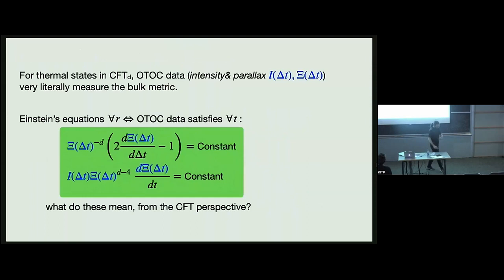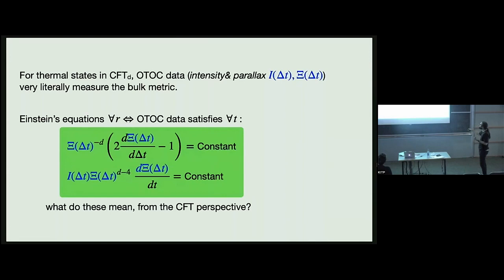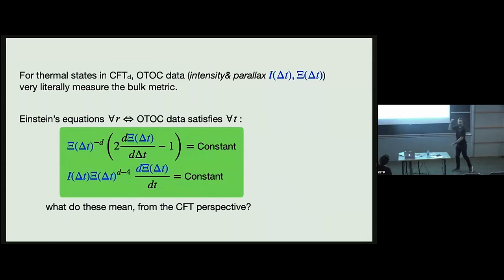You can do this in any dimension. The data measured from the out-of-time-order correlator directly gives you the metric, and since we can express the metric in terms of the measurement, we can express Einstein's equation in terms of the measurement. This takes a nice local form: those two equations for all time are equivalent to Einstein's equation for all radius. It's very surprising that an equation for all r turns into a local equation for all t. The dream is that just assuming there's a large gap in the bulk, we should be able to derive this from a bootstrap perspective.